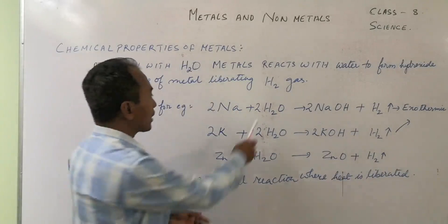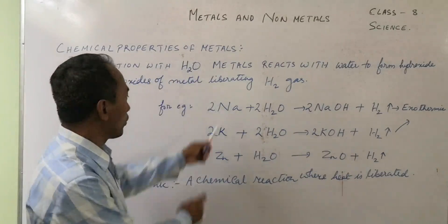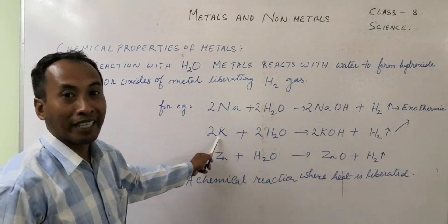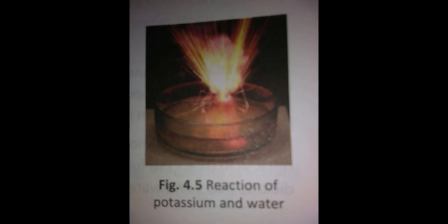In the reactions of sodium and potassium with water, heat is liberated. So these are called exothermic reactions. An exothermic reaction is a chemical reaction where heat is liberated. In your book you may see that sodium and potassium, when placed in water, liberate heat — fire comes out. That is an exothermic reaction.